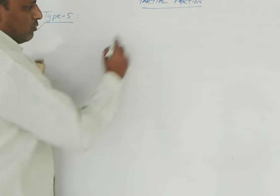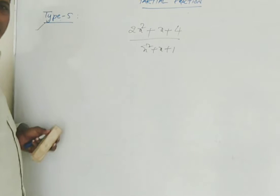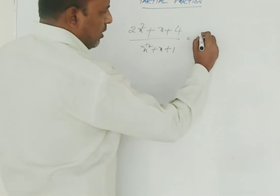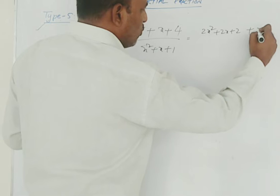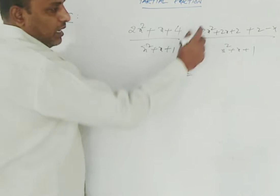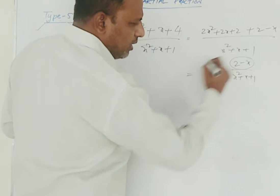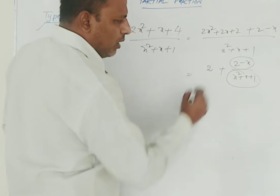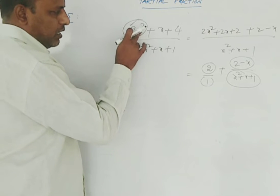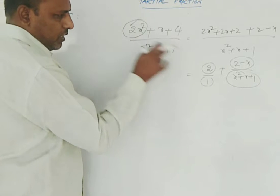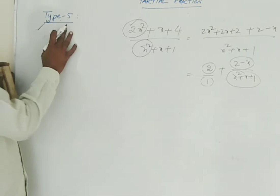Similarly, consider 2x squared plus x plus 1 by x squared plus x plus 1. This can be written as 2x squared plus 2x plus 2 plus 2 minus x by x squared plus x plus 1, which equals 2 plus 2 minus x by x squared plus x plus 1. The degree of r of x is 1 and the degree of g of x is 2. The coefficient of the highest degree term in the numerator is 2 (term 2x squared), and in the denominator is 1 (term x squared), giving 2 by 1. So this is Type 5.